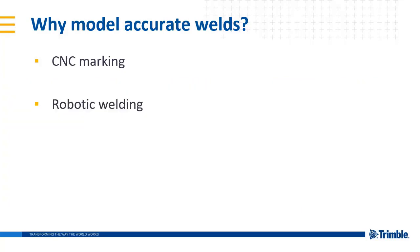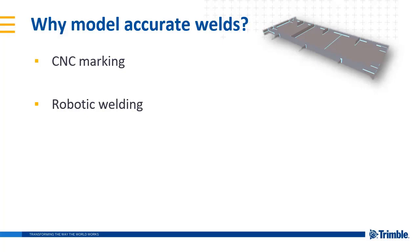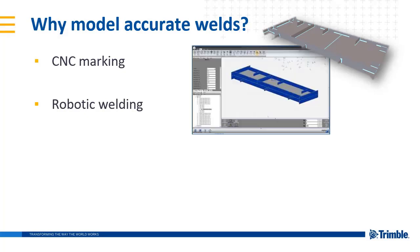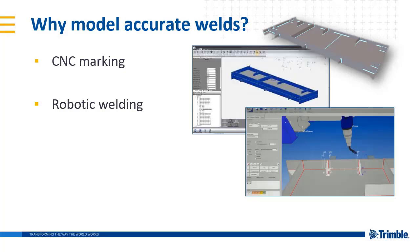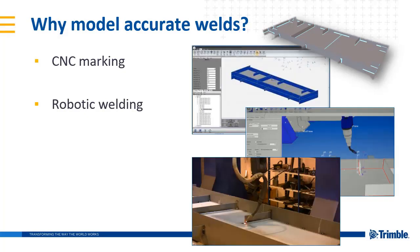Another area where having accurate model welds can be beneficial is in robotic welding. Solutions are also available to automate the welding of assemblies. Here we see images from the PEMMX solution, which uses the model assembly and weld information to calculate and execute the final welding of a human tack-welded assembly.